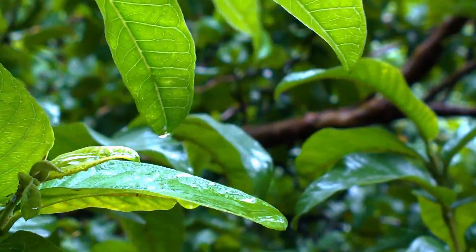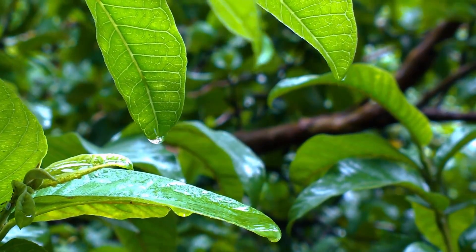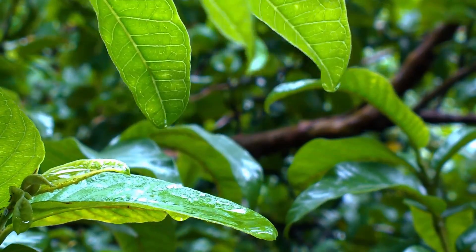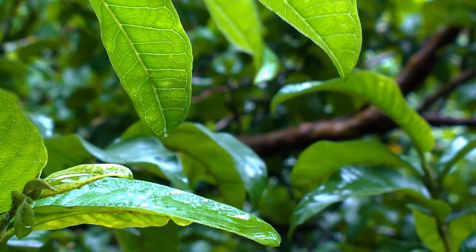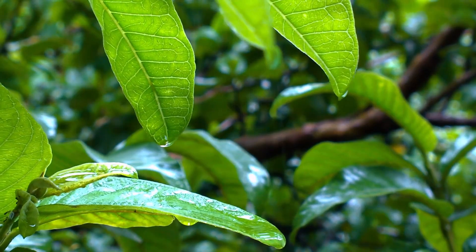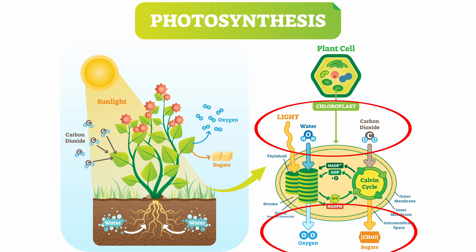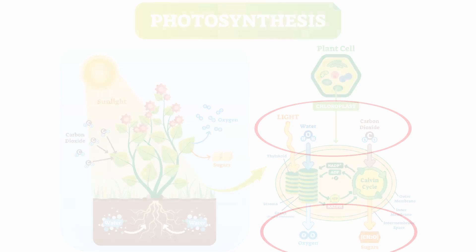The leaves come in many different shapes but appear in a green color most of the time because they contain the color-giving plant cell chloroplasts. These are the parts of the plant that do photosynthesis. During that process they assimilate light energy and absorb carbon dioxide from the air to produce oxygen and energy for the tree itself.